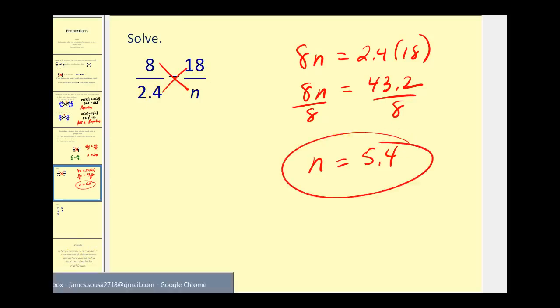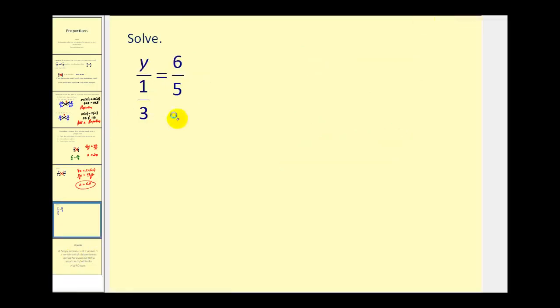Let's go ahead and take a look at one more. This one looks a little more confusing because the denominator of this first fraction is a fraction in itself. So it's going to be helpful to rewrite this to make it look a little nicer. Meaning we have y over 1/3 must equal 6 over 5.